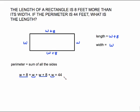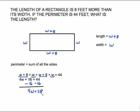All of that has to equal 44. We finally have an equation we can solve. Group up your like terms: W plus W plus W plus W makes 4W, and 8 plus 8 is 16. This is now a plain old two-step equation. Subtract 16 from both sides gives us 4W equals 28. Divide by 4 and we get W equals 7.